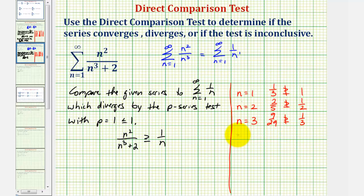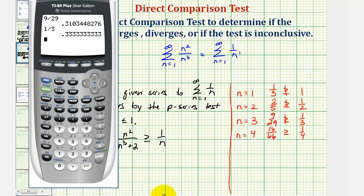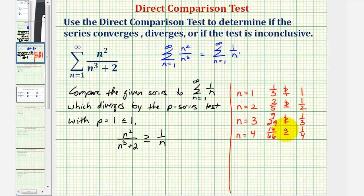Let's try n equals four. When n equals four we'd have sixteen divided by sixty-four plus two, that'd be sixteen divided by sixty-six. And we'd have one fourth for one divided by n. But notice that sixteen divided by sixty-six is less than 0.25, so again this is false. This is telling us that the terms of our series are not greater than or equal to the terms of the known diverging series.